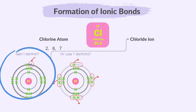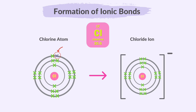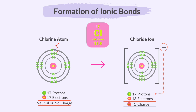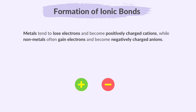Chlorine gains an extra electron to get a full outer shell, turning into a chloride ion. So when a chlorine atom, which contains 17 electrons, becomes a chloride ion, it gains 1 electron, leaving it with 18 electrons. The chloride ion can be represented to show its electron configuration, with a full outer shell and a negative charge. Why does the chloride ion have 1 negative charge? When it gains an electron, it becomes negatively charged because it has more electrons than protons, again causing an imbalance. Metals tend to lose electrons and become positively charged cations, while non-metals often gain electrons and become negatively charged anions.